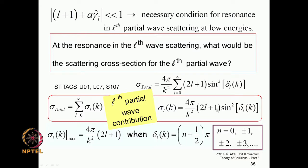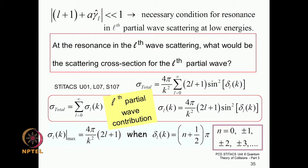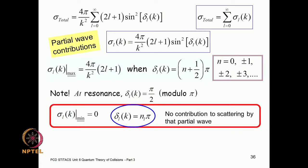At the maximum value, when sine squared of the phase shift equals 1, the phase shift will be (n + 1/2)π. So at resonance the phase shift will be π/2 modulo π — it can be π/2, 3π/2, 5π/2, and so on. That is the resonance condition.